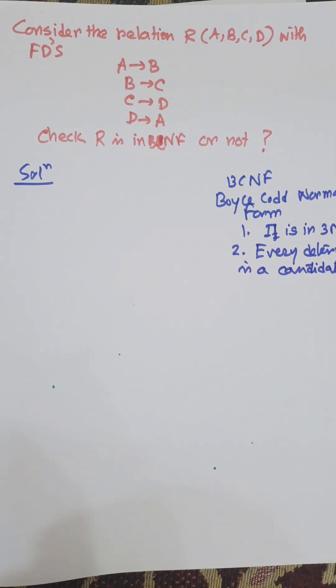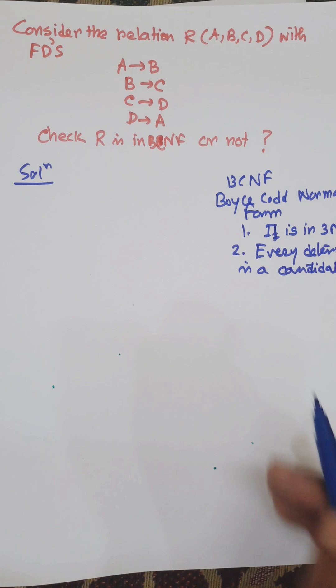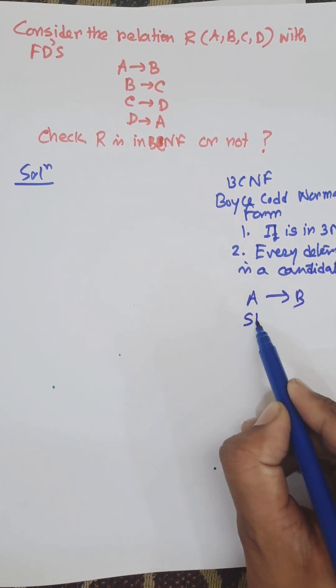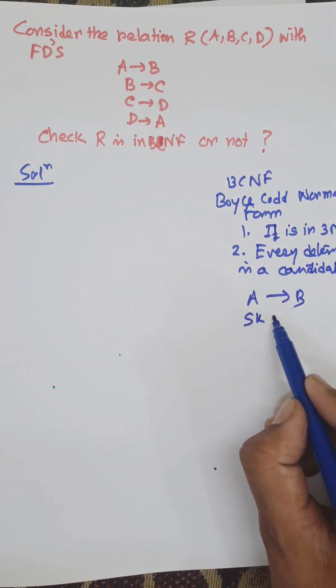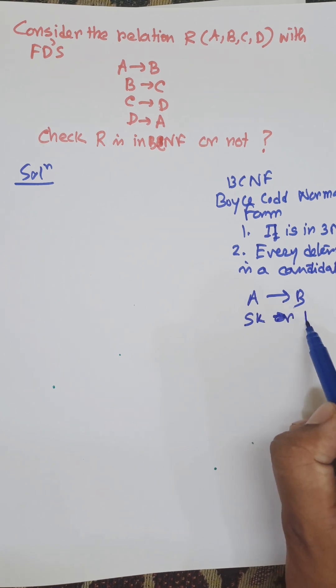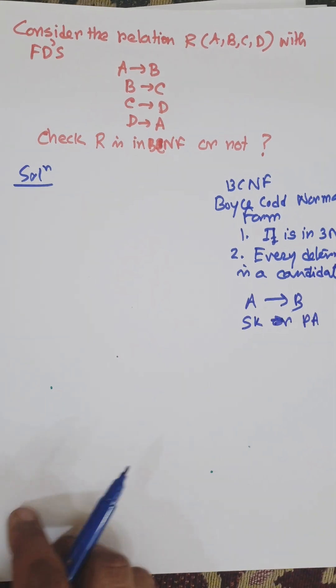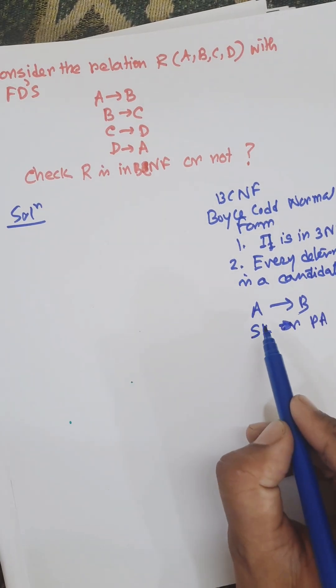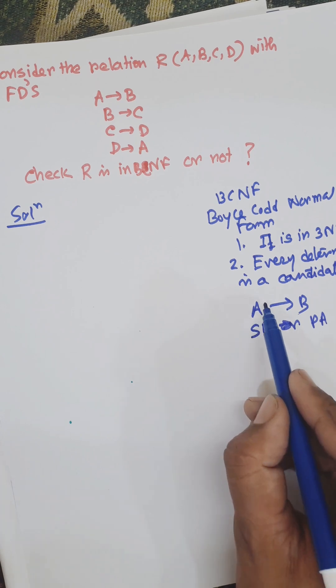So it is stricter than third normal form. In 3NF, A can be either a super key or candidate key, or B is a prime attribute. But in BCNF, A must be a candidate key. So every determinant must be a candidate key.